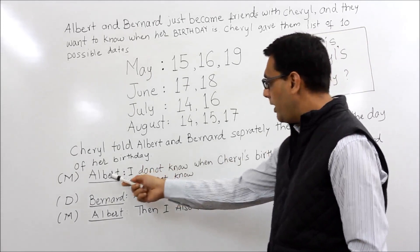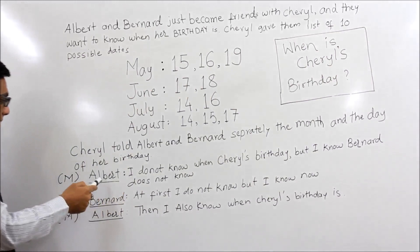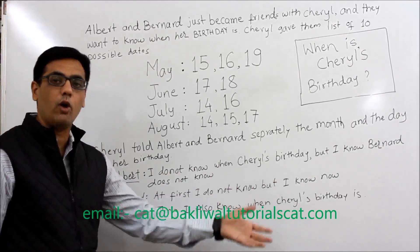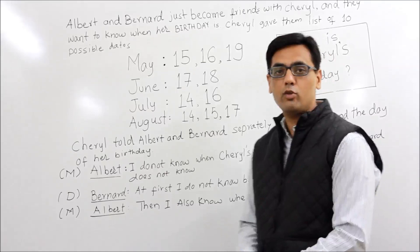Cheryl told Albert and Bernard separately the month and the day of her birthday. Albert has been told the month. After knowing the month, Albert said: 'I do not know when her birthday is, but I know Bernard does not know.' Then Bernard, after hearing this, says: 'At first I did not know, but now I know when the birthday is.' And then Albert says: 'Then I also know.'